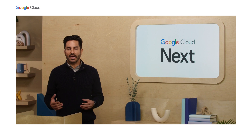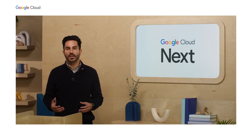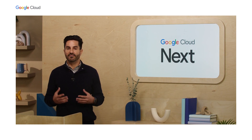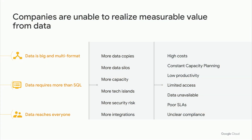At Google, we're fortunate to work with many organizations and we're seeing three themes as to why organizations struggle to get value. Number one, data is big and multi-format — it's no longer just structured text data; increasingly it's images, audio, video, and data from many different sources. Number two, data goes beyond SQL — organizations are looking to adopt new programming frameworks and workloads like AI, ML, and streaming. And number three, data needs to reach everyone, going beyond the data organization to impact the entire company, suppliers, partners, and ultimately end users and customers.